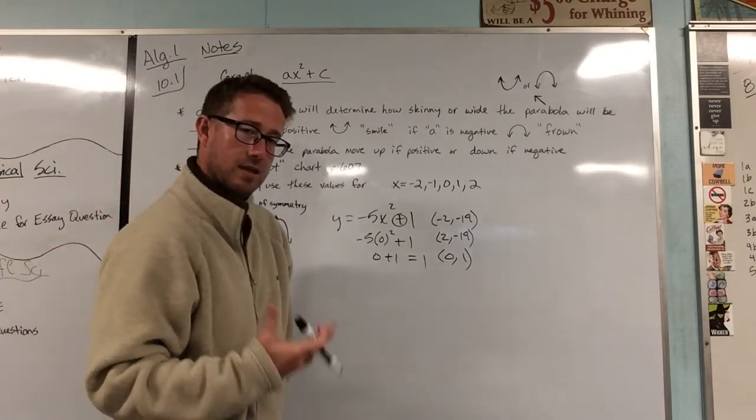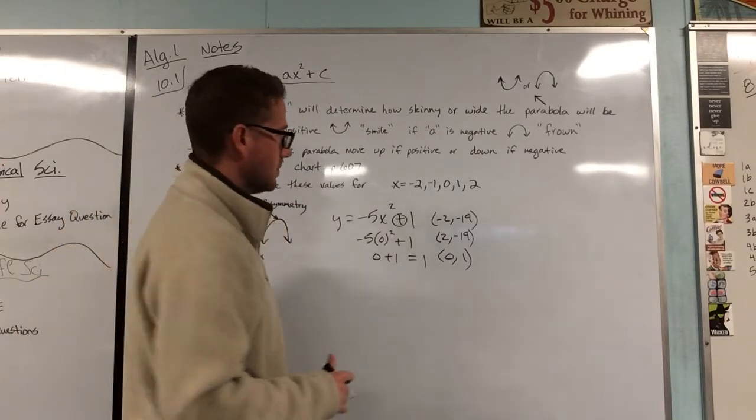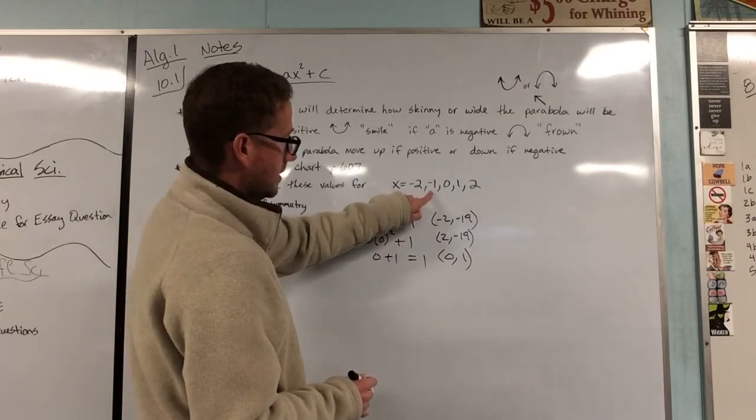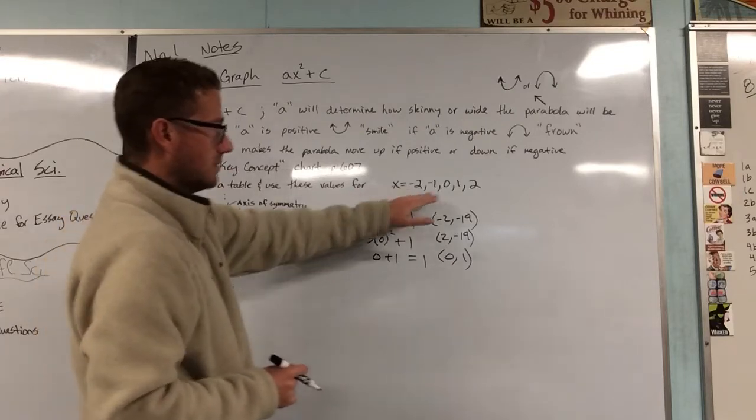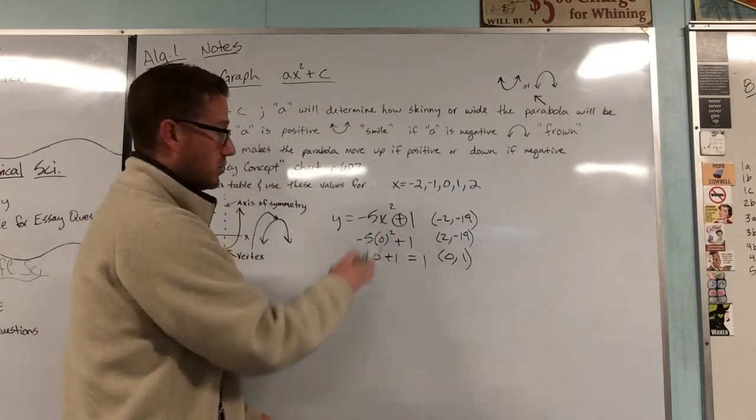All right. Now again, just to save a little bit of time here, let's skip out on that negative 1, positive 1. You can use those exact same steps that we've been doing for the negative 2 and positive 2, and we're going to graph this now.